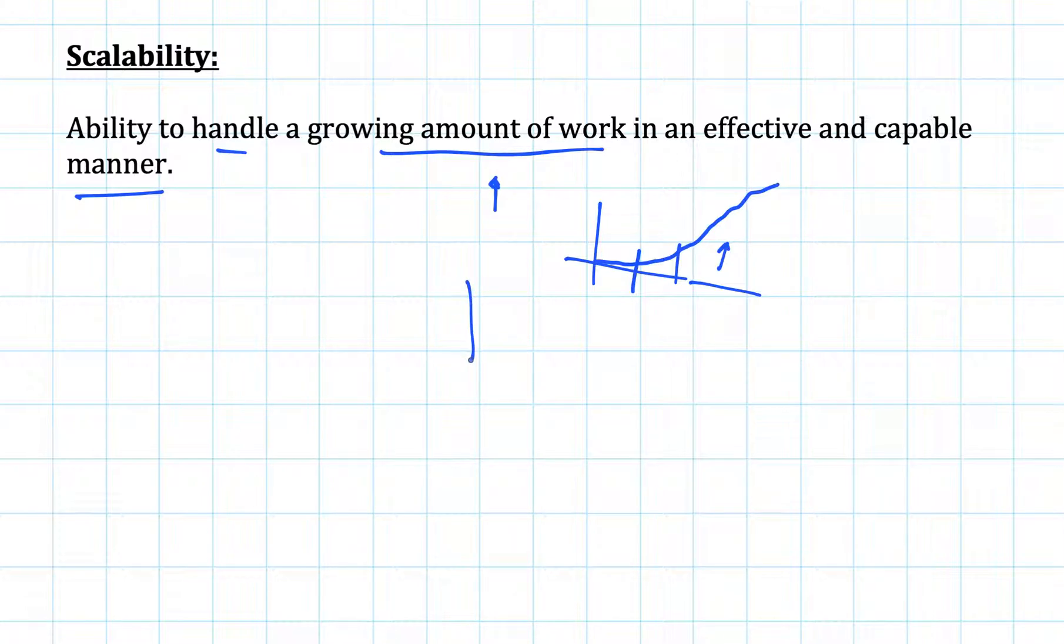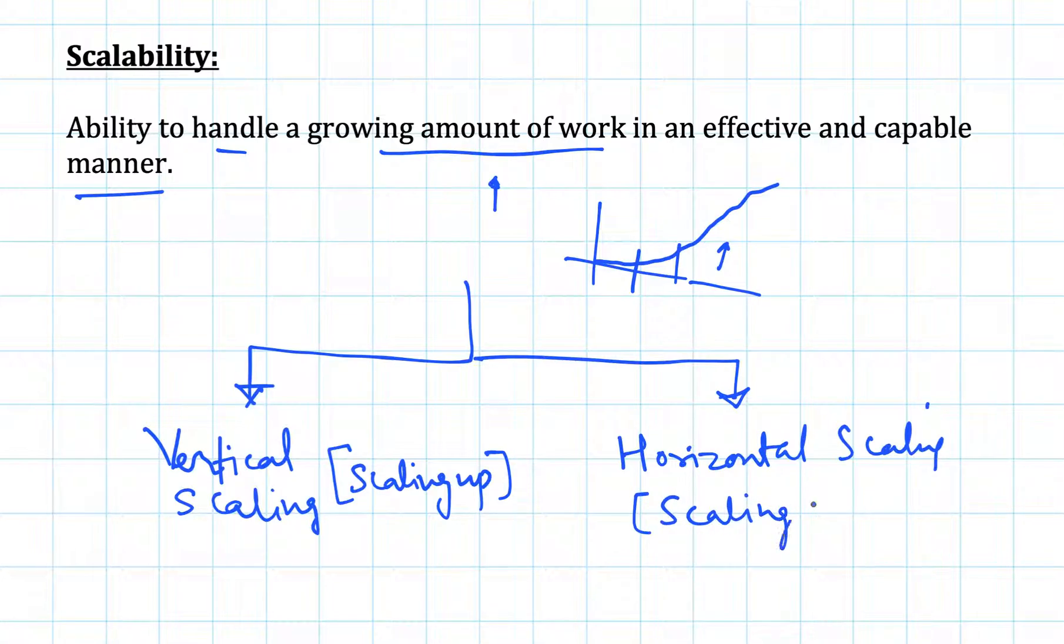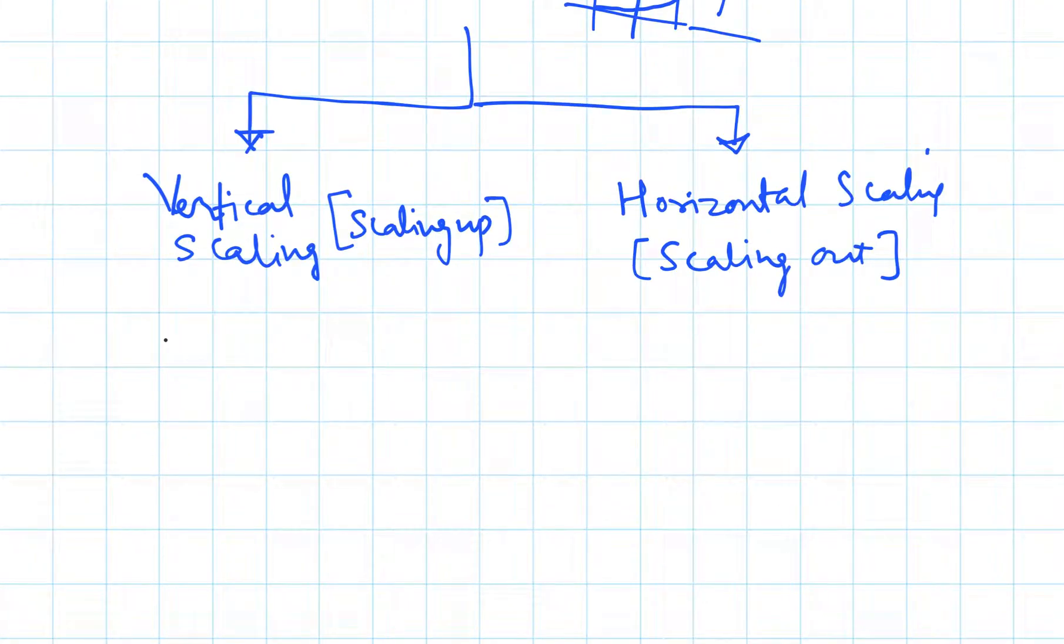There are mainly two ways to achieve scalability. One we call vertical scaling, also called scaling up sometimes, and the second approach is to do horizontal scaling, also called scaling out.